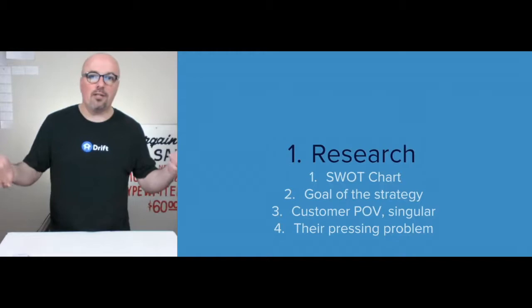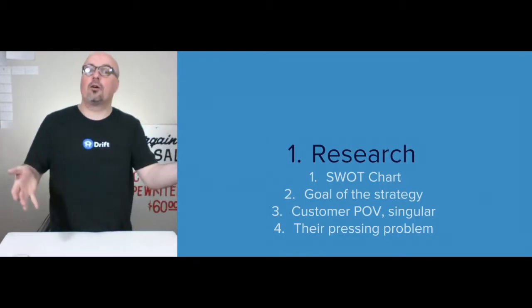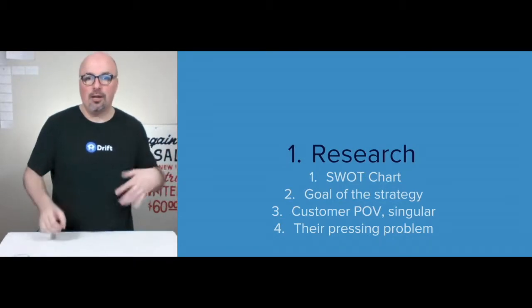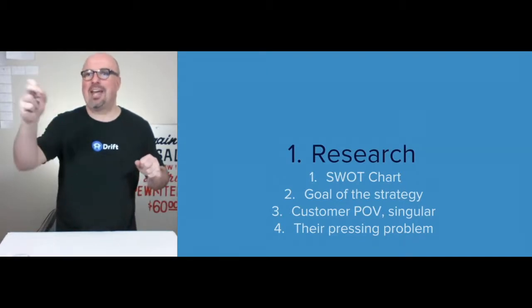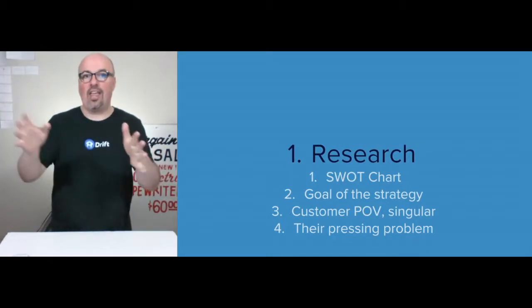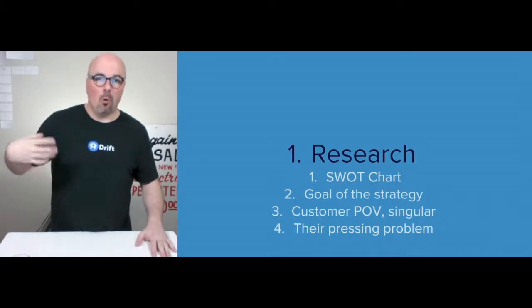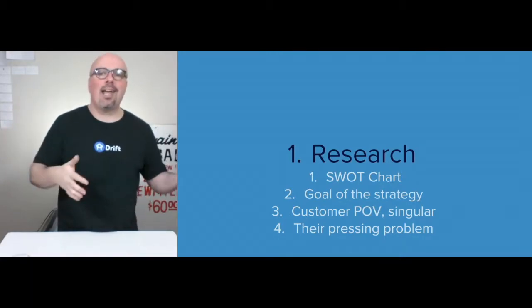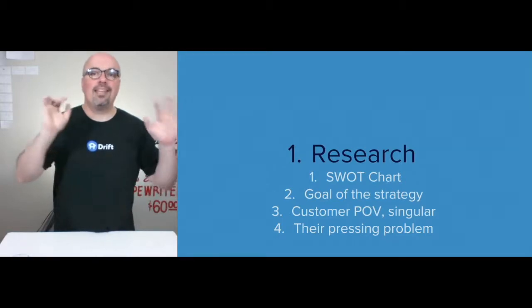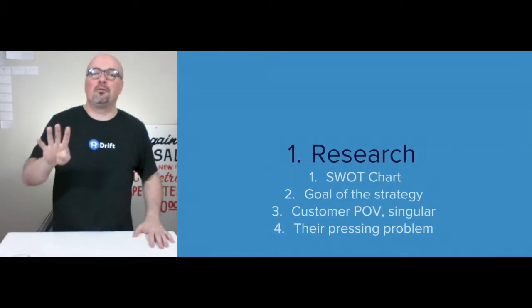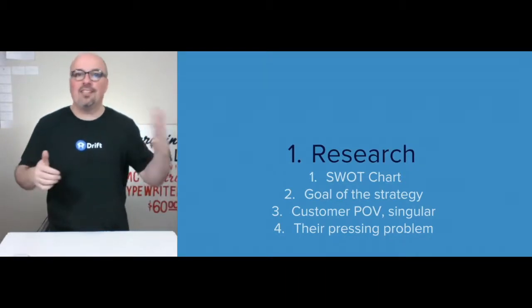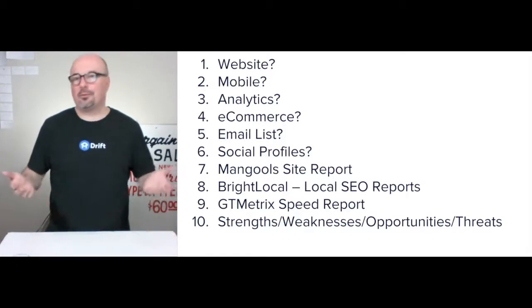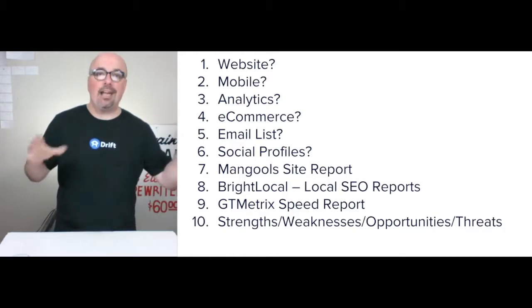The first question we help them answer is: what's the goal of the strategy, followed by what's the customer point of view. It's always going to be singular. Don't think so much about age, race, and sex of that person — think more about what's important to them, what they prioritize day to day, what they're thinking, seeing, feeling, and doing. Number four is the pressing problem that customer point of view is dealing with — some of the questions and reports that go into putting together a SWOT chart.